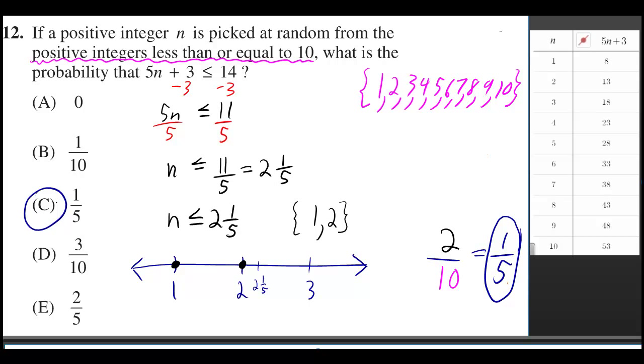If a positive integer n is picked at random from the positive integers less than or equal to 10, what is the probability that 5n + 3 ≤ 14?